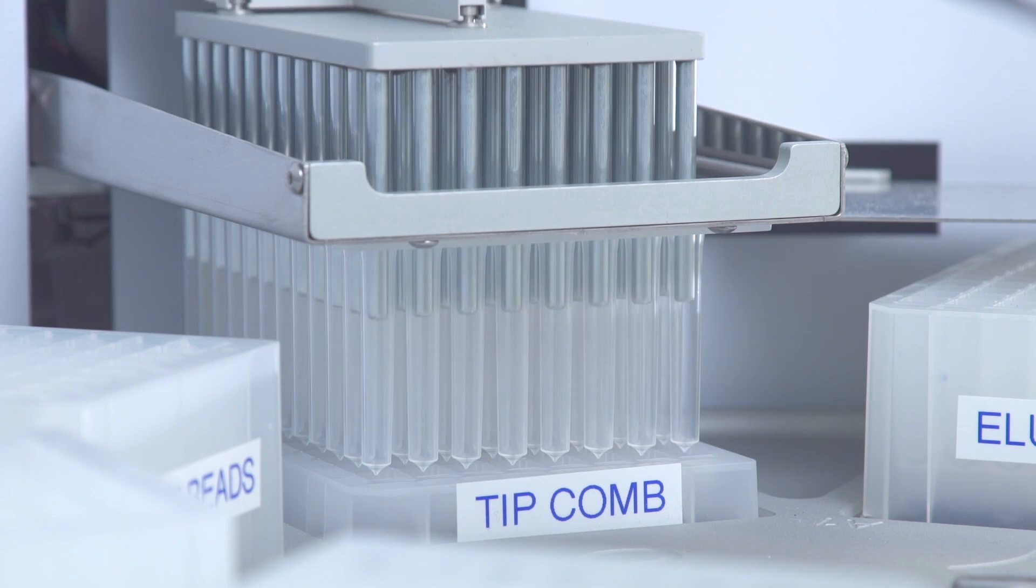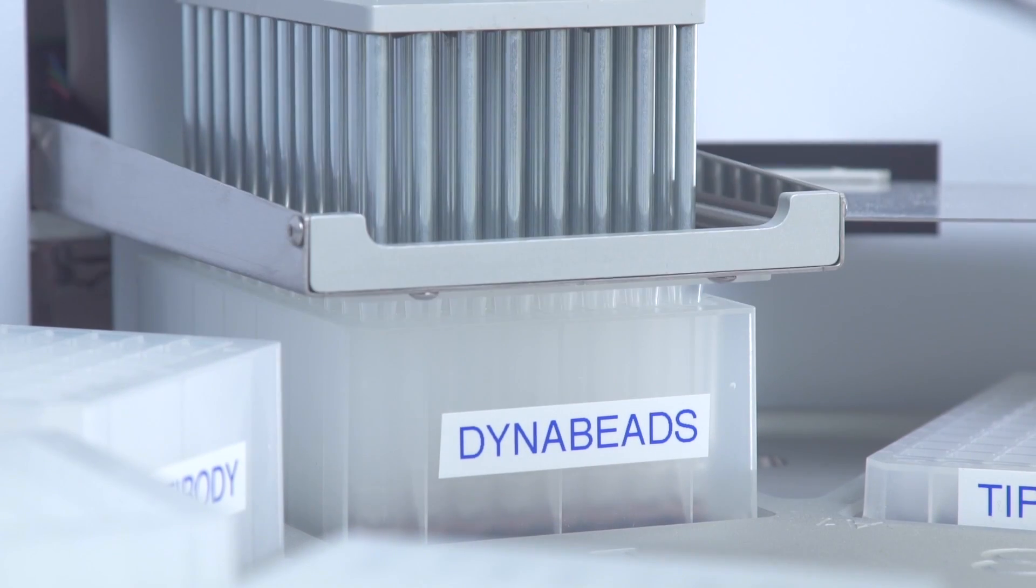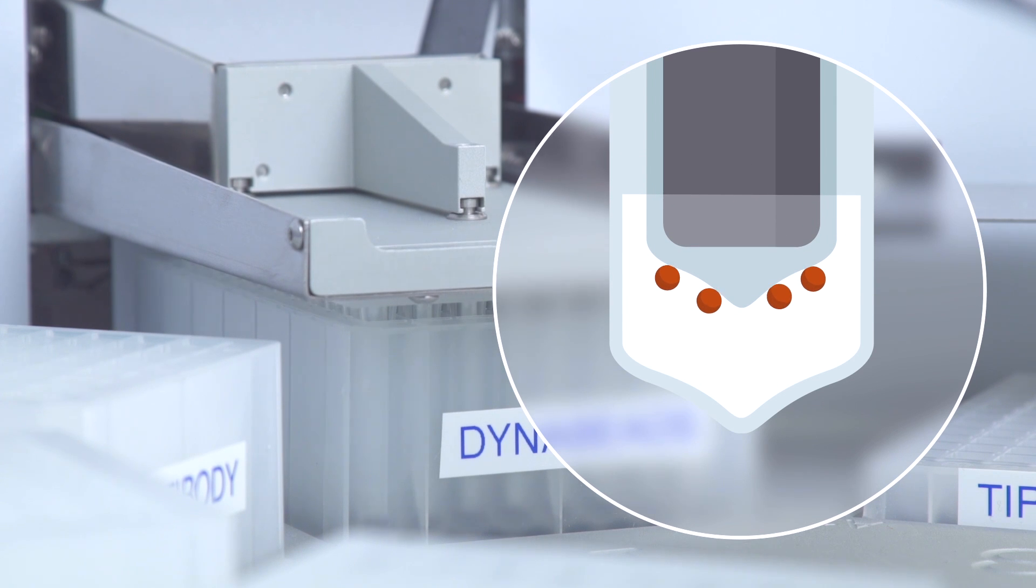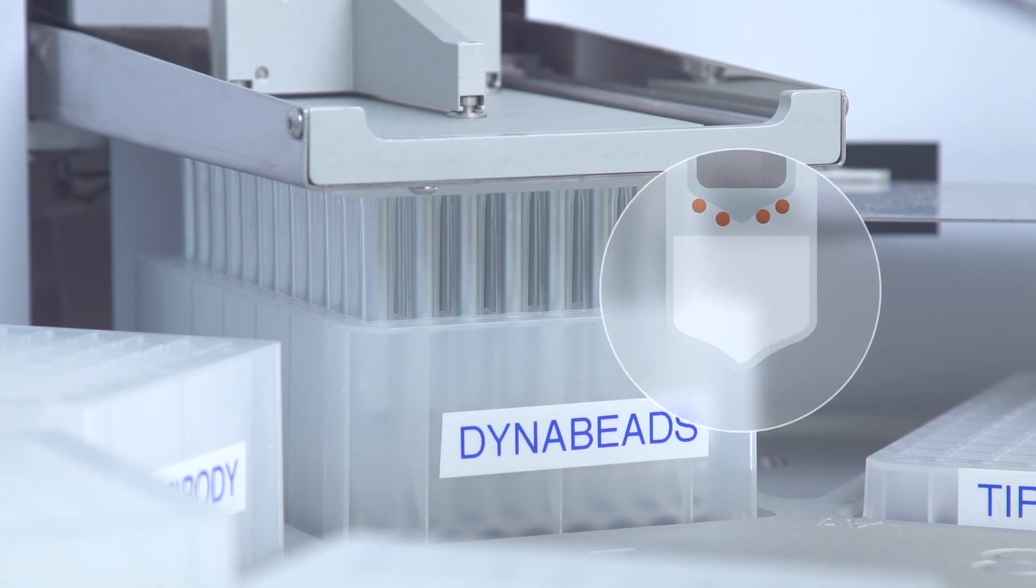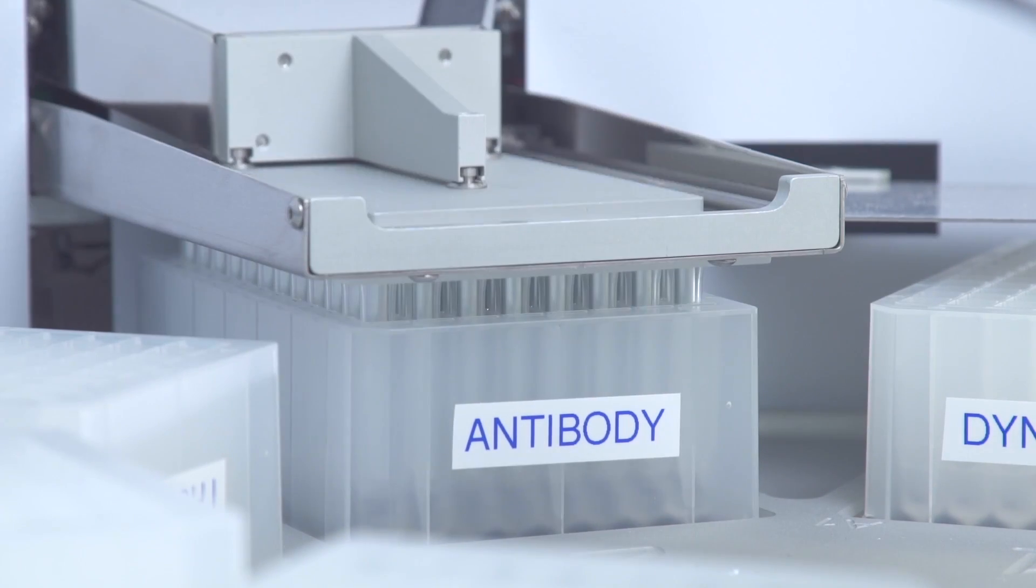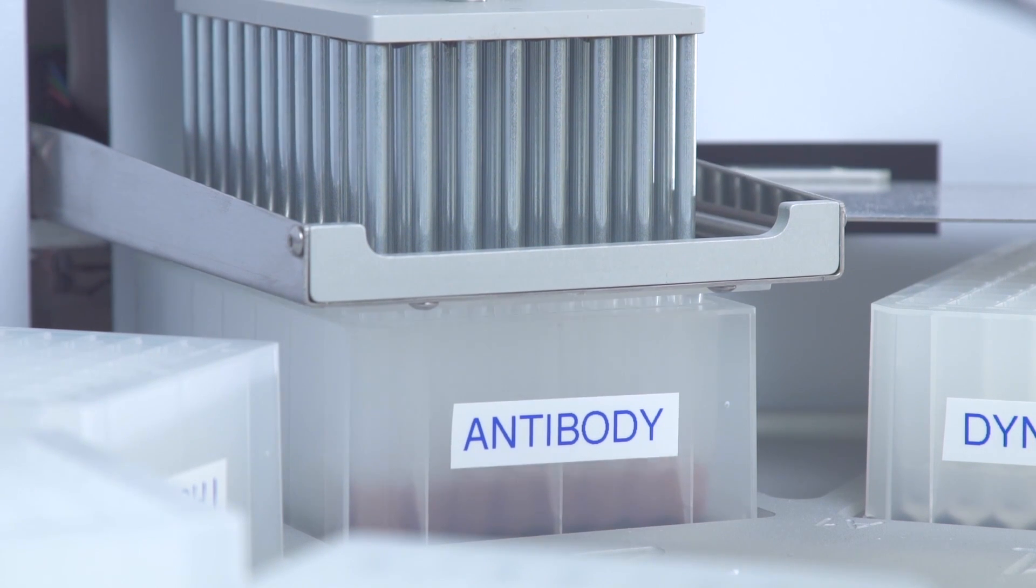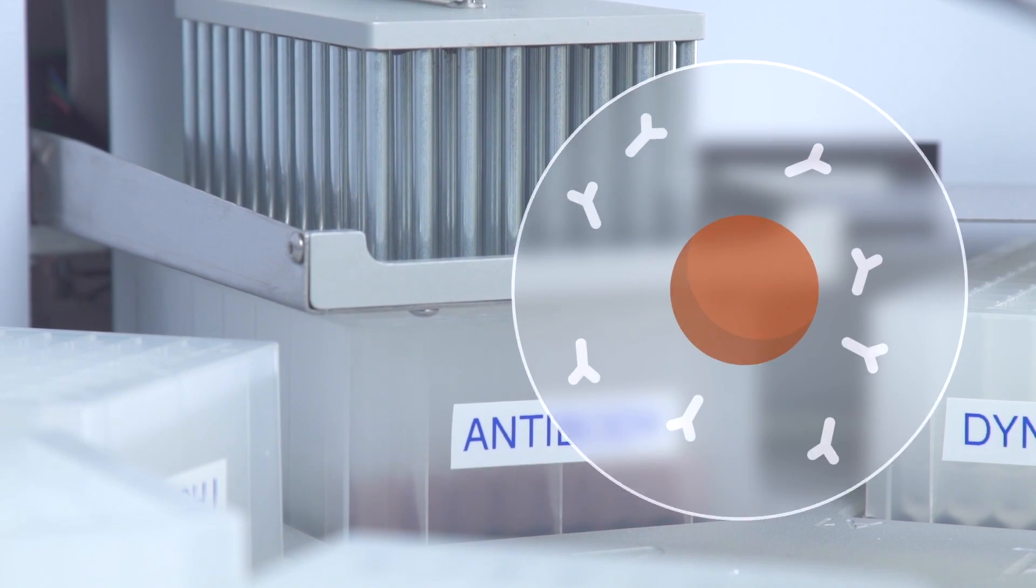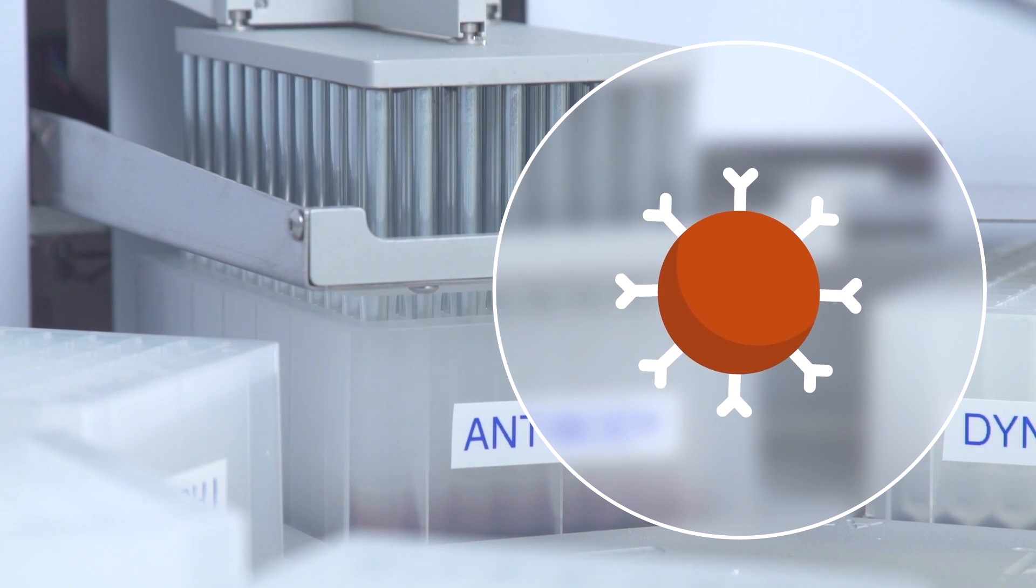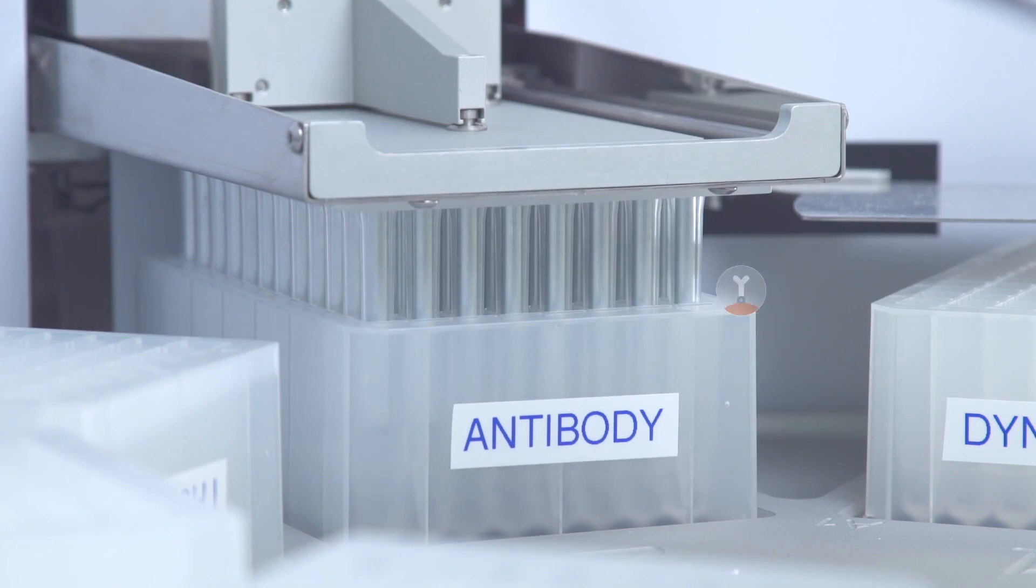The tip combs are used together with the magnetic rods to collect the DynaBeads. Then, the beads are moved to the next plate containing the antibody while the metal shield under the tip combs prevents cross-contamination between wells. The beads are first released in the antibody solution with fast mixing. Then, the tip combs are moved slowly up and down to keep the DynaBeads in suspension during the 10-minute antibody binding step.